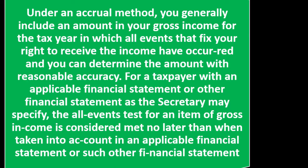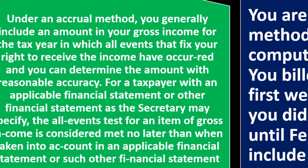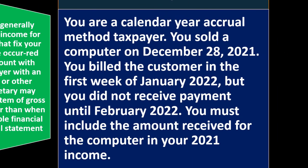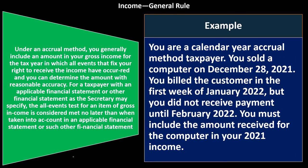For a taxpayer with an applicable financial statement, the all-events test for an item of gross income is considered met no later than when taken into account in an applicable financial statement. Example: you are a calendar year accrual method taxpayer. You sold a computer on December 28th, 2021. You billed the customer in the first week of January 2022, but you did not receive payment until February 2022. You must include the amount received for the computer in your 2021 income. You can see the cutoff date comparison here.